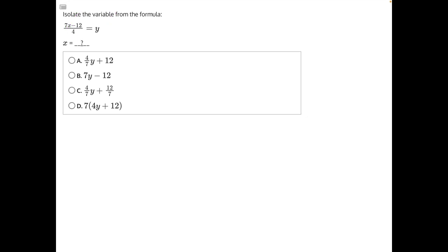Let's start by rewriting our formula. 7x minus 12 over 4 is equal to y.